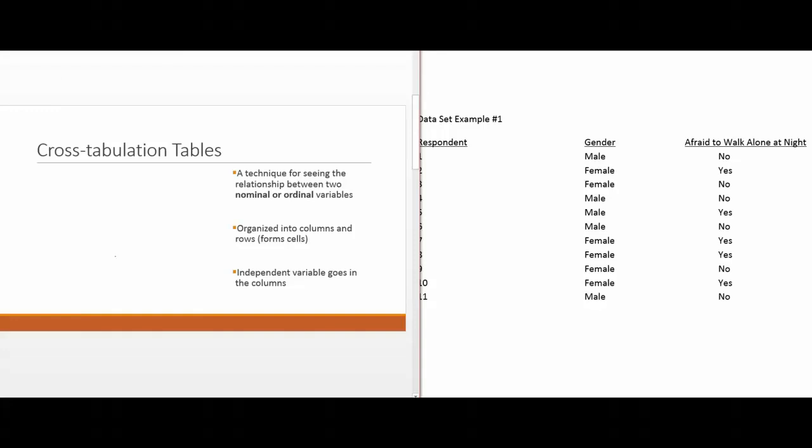Just using logic, gender should influence whether you're afraid to walk at night and not the other way around. Whether you're afraid to walk at night doesn't influence your gender. So gender is my independent variable, and my independent variable is going to go in columns. Columns are the ones that go from top to bottom. So let me create two columns, one for male and one for female. I also need to create a total column, which we'll talk about later.